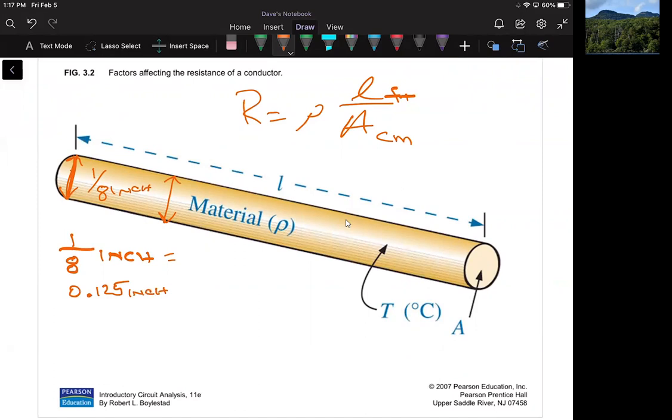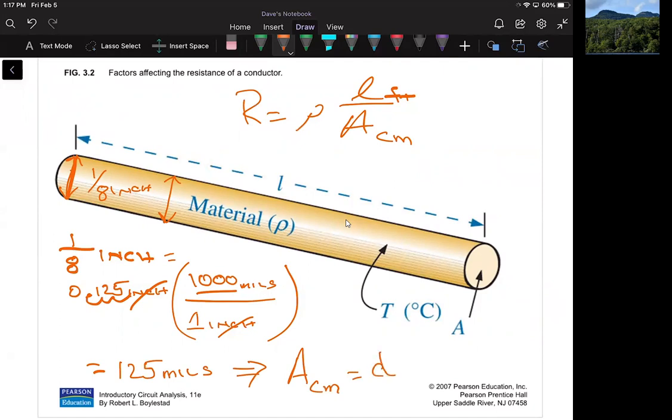One inch contains 1,000 mils. Inches cancel out. This is just moving the decimal three places multiplied by 1,000. So this ends up being 125 mils. You're not done because you want to take that and the area in circular mils is equal to the diameter in mils squared.